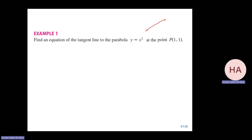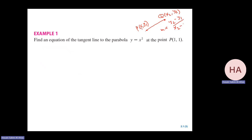You can find the slope, which is delta Y over delta X. If you have two points, you have a line passing through two points P and Q, then you can find the slope. You have a point, then you can find the equation. But in this problem, you have a function and you have only one point — you don't have another point.